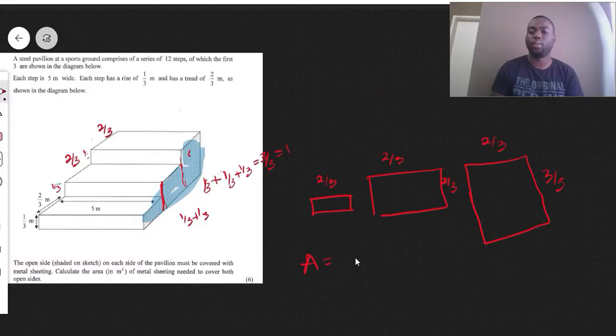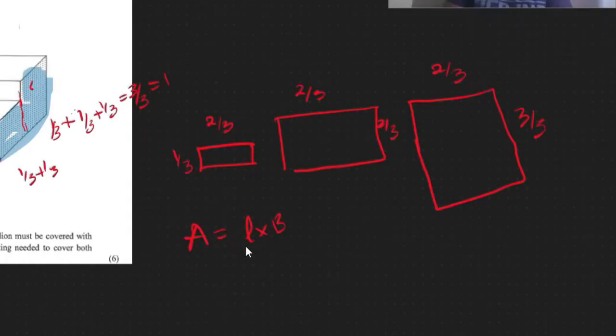The area of a rectangle is length times breadth. So for the first one this will be 2 over 3 times 1 over 3. For the second one it will be 2 over 3 times 2 over 3. For the third one it will be 2 over 3 times 3 over 3.